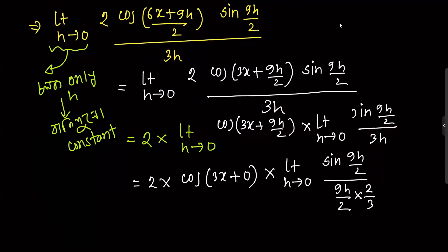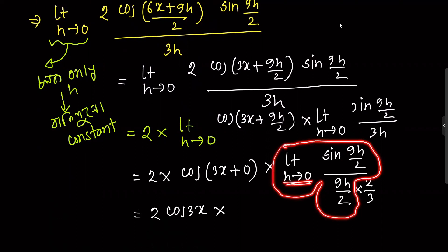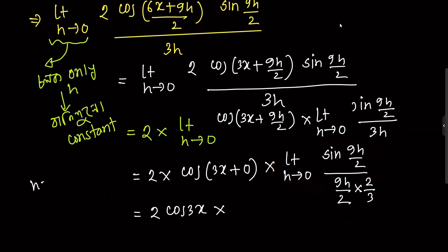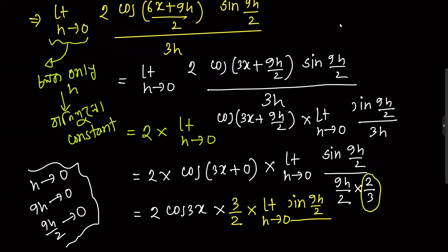Now let me write: 2 cos 3x into the limit result. When h tends to 0, 9h by 2 also tends to 0. The constant factor is 2 by 3, and adjusting gives 3 by 2. So limit h tends to 0 of sin 9h by 2 divided by 9h by 2 equals 1.